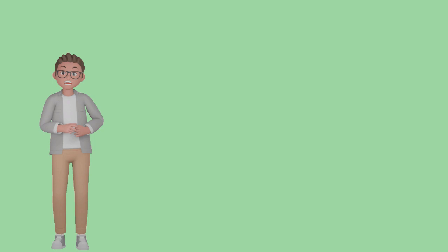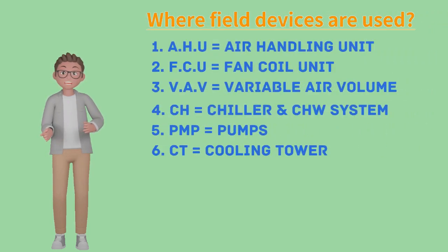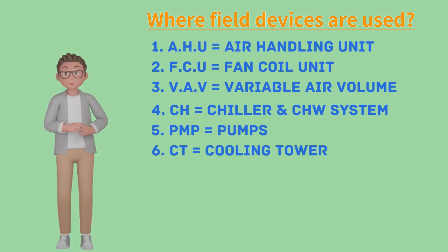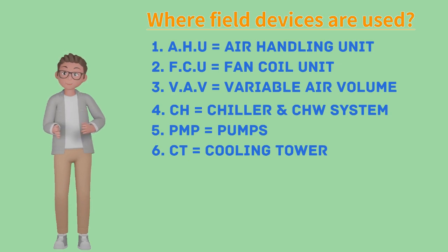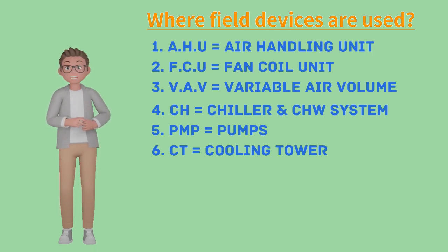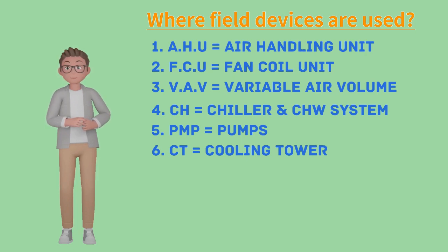Before you know about field devices, you need to understand where they are used. First, AHU — abbreviation for Air Handling Unit. Second, FCU — abbreviation for Fan Coil Unit. Third, VAV — abbreviation for Variable Air Volume. Fourth, Chiller, which we write as CH, and Chilled Water System as CHW.